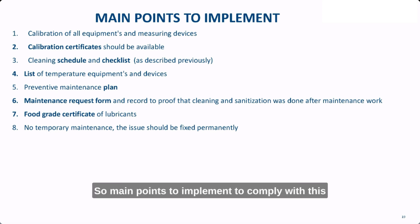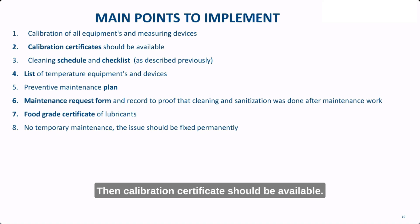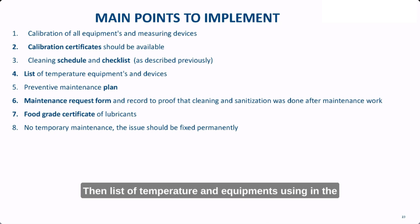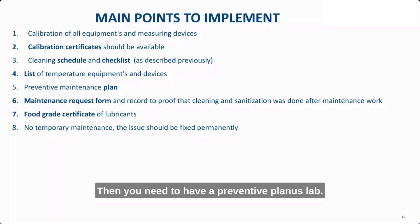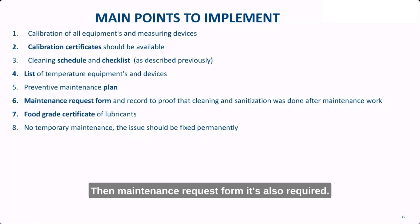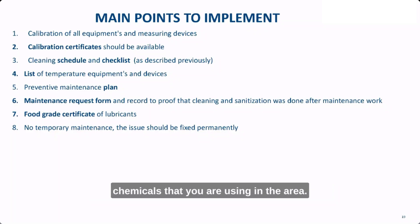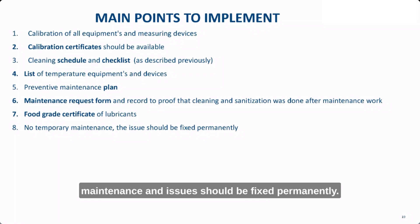To summarize the key documents and practices needed to comply with Clause 8: calibration of equipment and calibration certificates; a cleaning schedule and monitoring checklist; a list of temperature equipment with numbering and calibration records; a preventive maintenance plan; a maintenance request form; food-grade certificates for lubricants and all chemicals used in the area; and no temporary maintenance fixes — all issues must be permanently resolved.